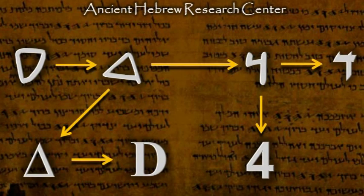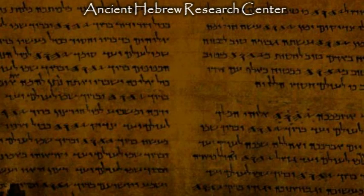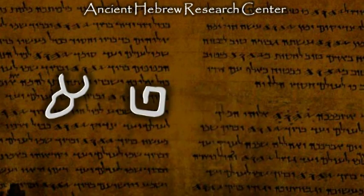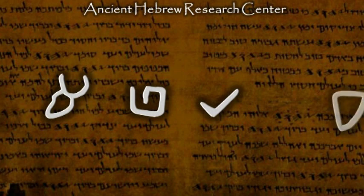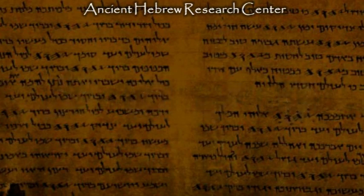We have now looked at the first four letters in the ancient Hebrew alphabet: the Aleph, Bet, Gimel, and Dalet. We will now look at a few Hebrew words that are derived from these letters.